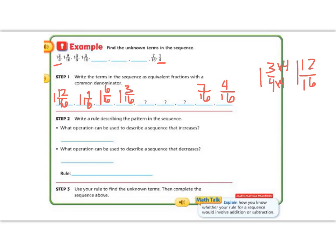It says write a rule describing the pattern. What operation can be used to describe a pattern that increases? Well, like in our last pattern, if our numbers are getting bigger, then we need to add. But in this case, our numbers are getting smaller. So that means that we need to subtract.